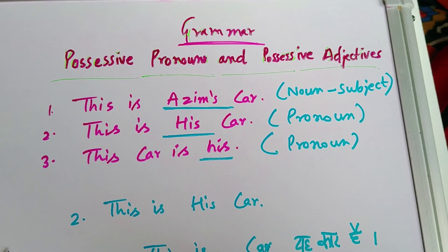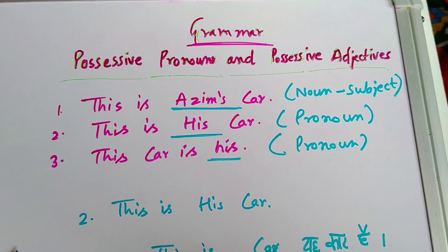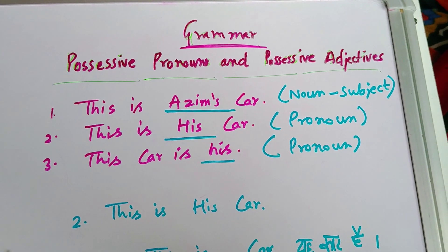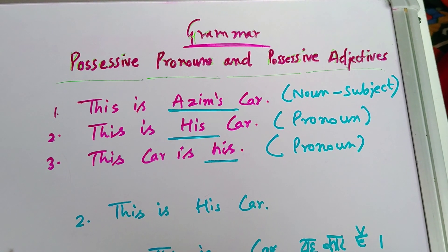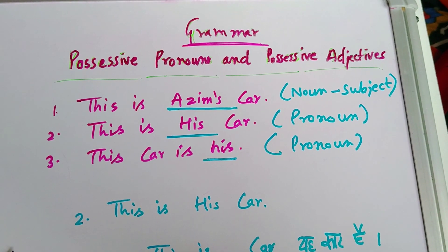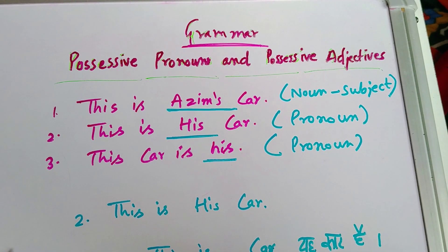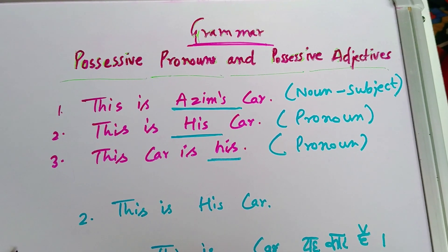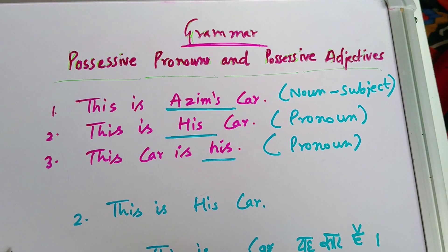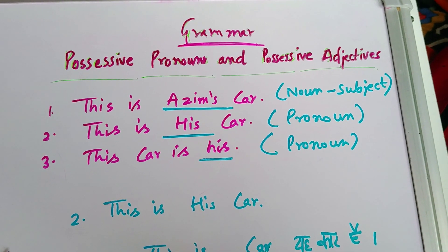There are three different sentences, if you can see very carefully. This is Azim's car. Very clear to everyone. This car is whose car? Azim's car. Azim's apostrophe s car. Azim's car is our main noun, that is our subject.